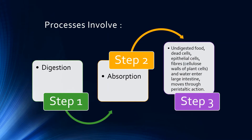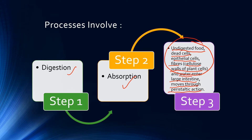We have learned digestion, step 1. We also have learned absorption, step 2. For the food that was unable to be absorbed — what we call as undigested food — together with the dead cells, epithelial cells, fibers (meaning cellulose from plant cell walls that we eat), and water: all these substances will enter the large intestine and move through peristaltic action along it.